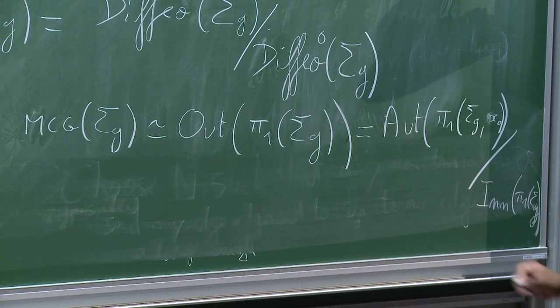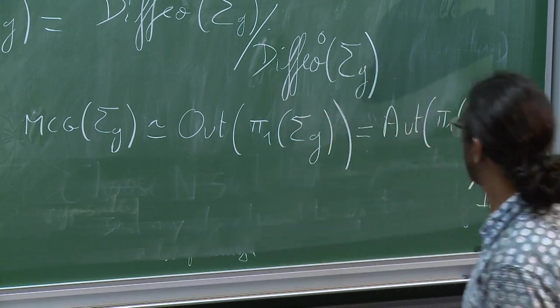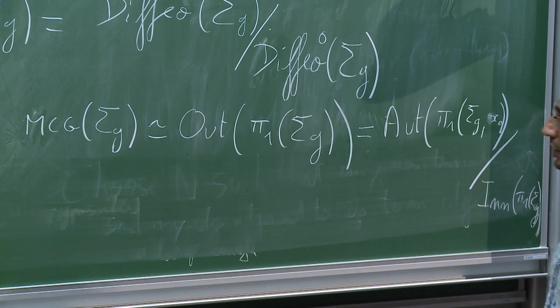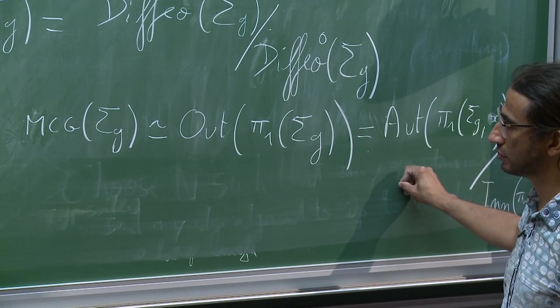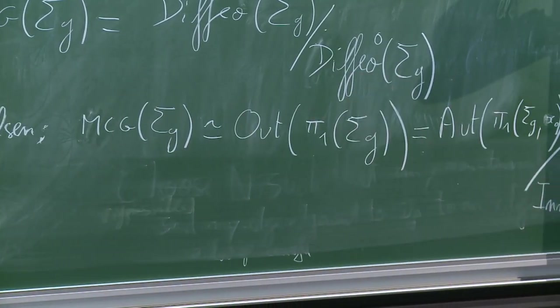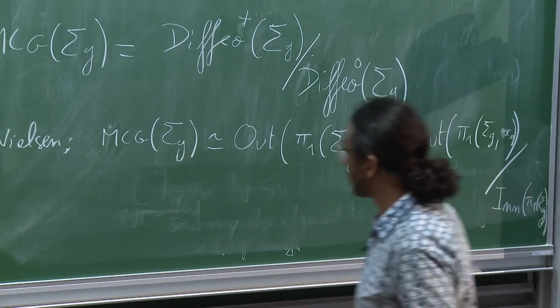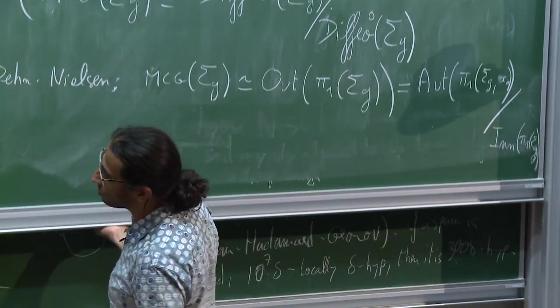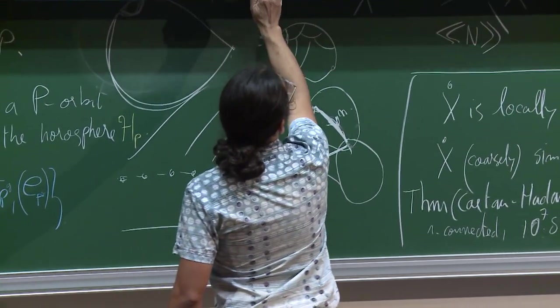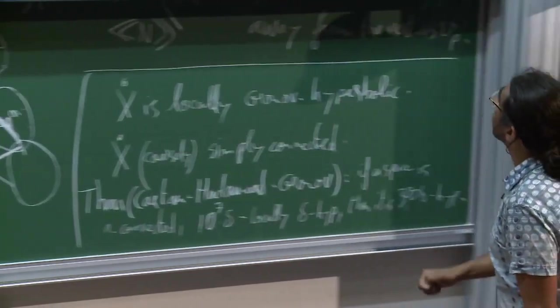It's the automorphism group quotiented by the inner automorphism group, and the inner automorphism group is just conjugations by elements of pi_1 of sigma g. So it's moving the base point. So there are many ways to consider the group to be very interesting.